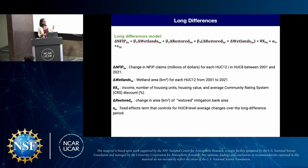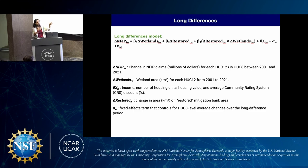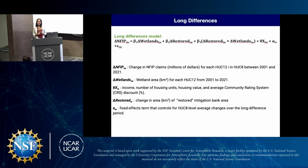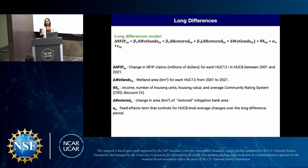My first model is a long difference model — essentially a regression that looks at the relationship between flood damages, the NFIP claims, and the change in wetland area over a 20-year time period. I'm looking at the differences in each of these variables between 2021 and 2001. The change in wetland area comes from the land cover mapping product LC-MAP from the National Land Cover Database of USGS — basically a yearly product of land cover.